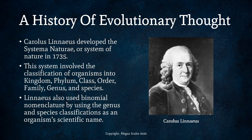Carolus Linnaeus developed the Systema Naturae, or System of Nature, in 1735. This system involved the classification of organisms into kingdom, phylum, class, order, family, genus, and species — which should sound familiar if you have taken biology. Linnaeus also used binomial nomenclature, using the genus and species classifications as an organism's scientific name — for example, Homo sapiens.